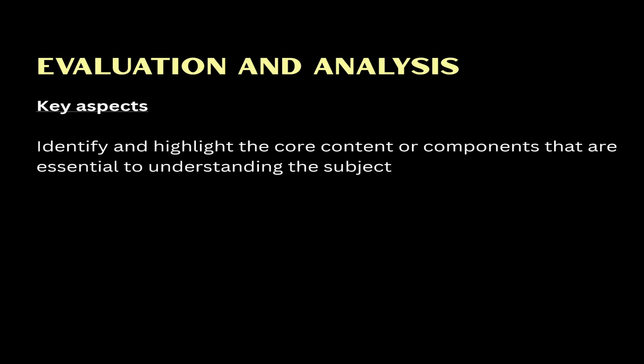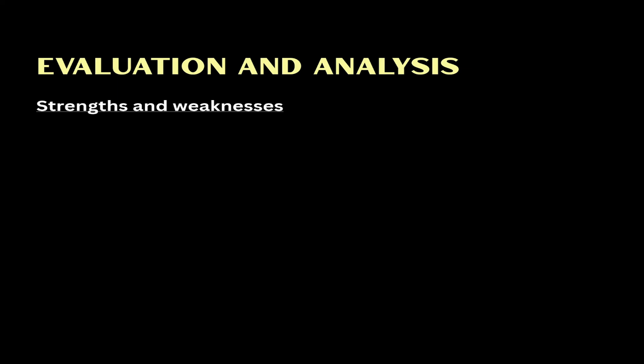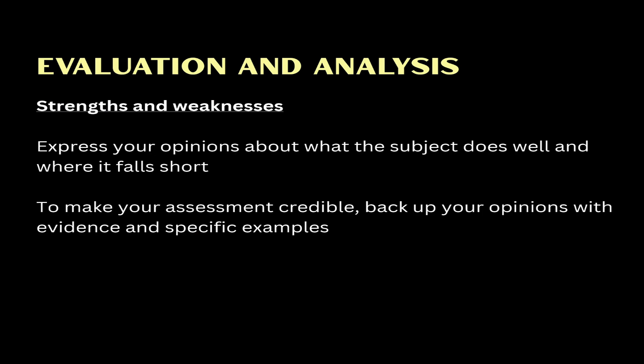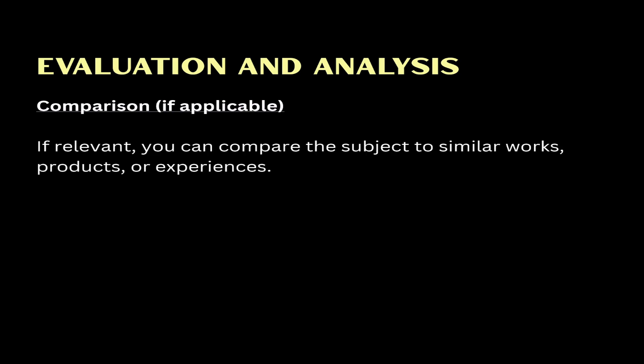In the key aspects section, identify and highlight the core content or components essential to understanding the subject. For example, in a book review these might include the plot, characters, writing style and themes; in a product review, the product's design, functionality, performance and user experience. You need to write about the strengths and weaknesses of these key aspects — express your opinions about what the subject does well and where it falls short, backing up your opinions with evidence and specific examples. Share your own feelings, emotions and reactions to the subject, expressing how it made you feel — whether it evoked strong emotions, resonated with you, or left you disappointed. Use vivid language and anecdotes to illustrate your personal responses. If applicable, you can also compare the subject to similar works, products or experiences, highlighting what sets it apart and where it falls short in comparison to others.